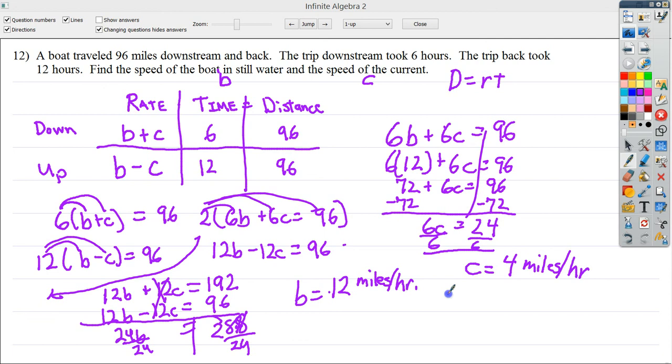So, in a nice written out form, B is equal to 12, and C is equal to 4. And both of those, I'm going to use, like, the car version, MPH. So, that's it. This boat goes 12 miles an hour, the current goes 4.